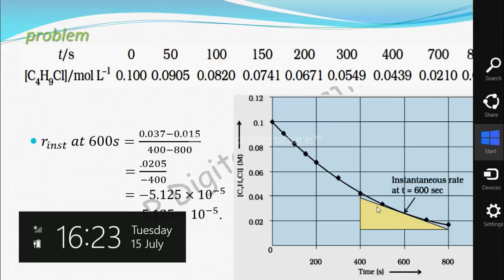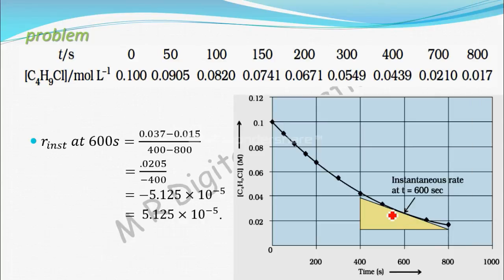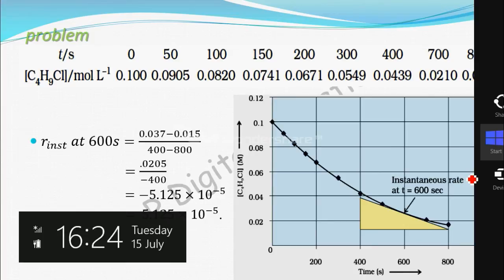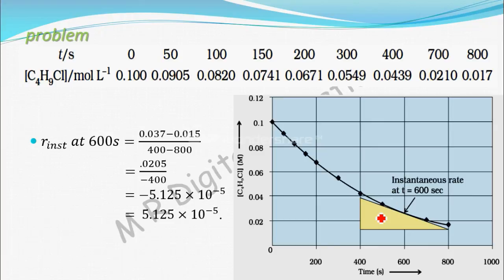You have to draw a tangent. The slope of this tangent will give you instantaneous rate. How do you calculate slope? Construct a right angle triangle. Slope is this distance divided by this distance.